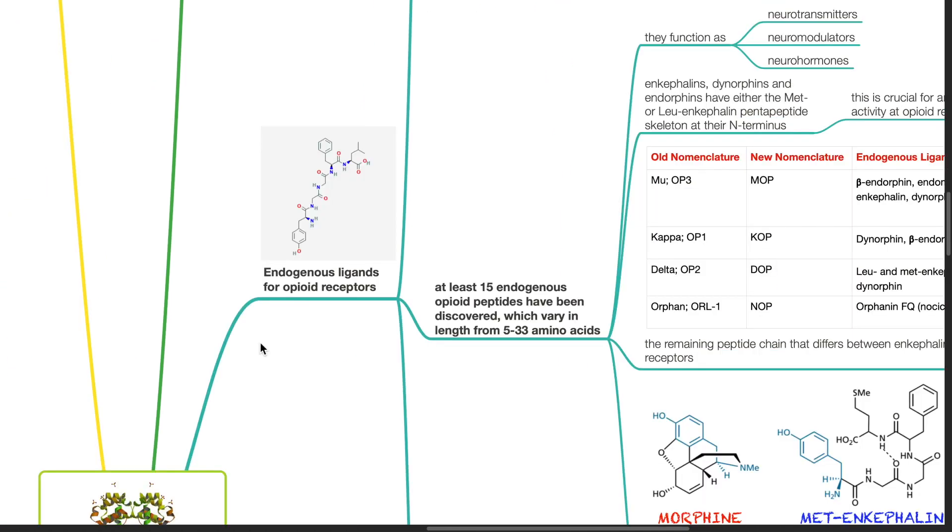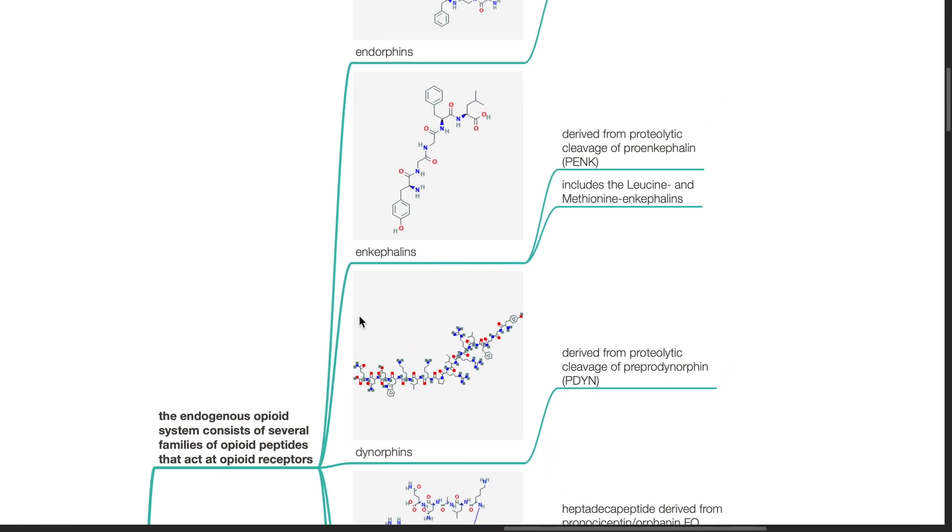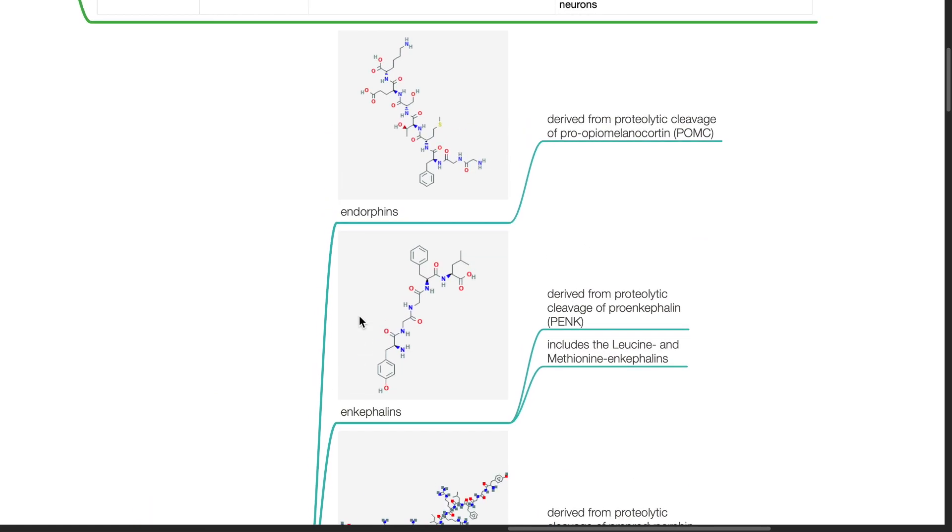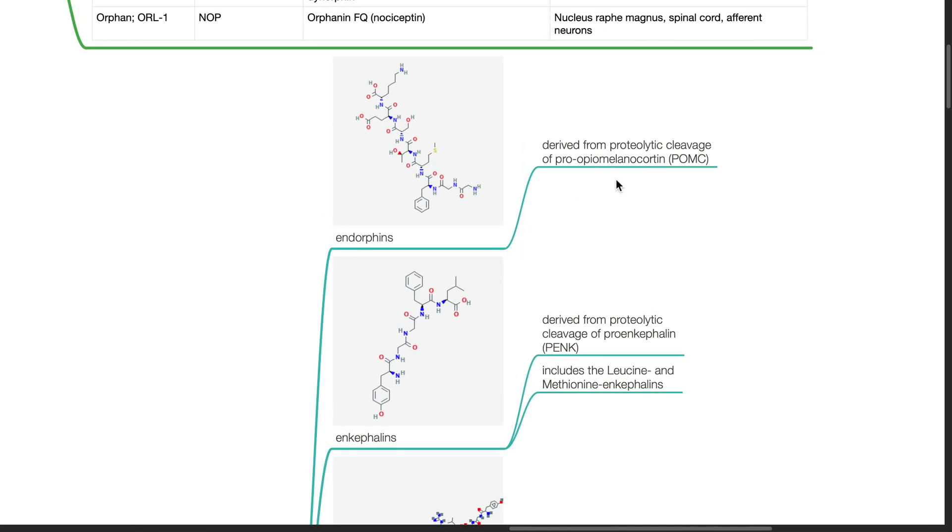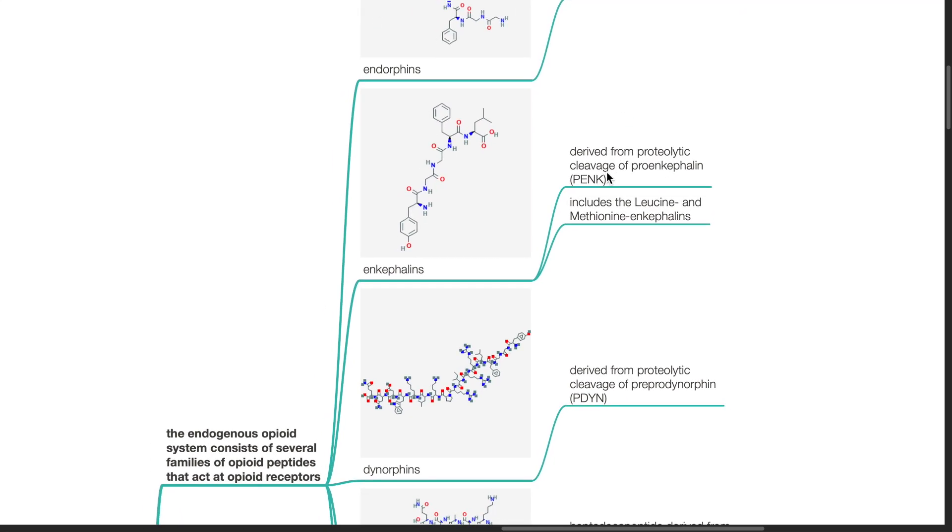Endogenous ligands for opioid receptors: The endogenous opioid system consists of several families of opioid peptides that act at opioid receptors, which includes endorphins, which are derived from proteolytic cleavage of pro-opiomelanocortin, and enkephalins.